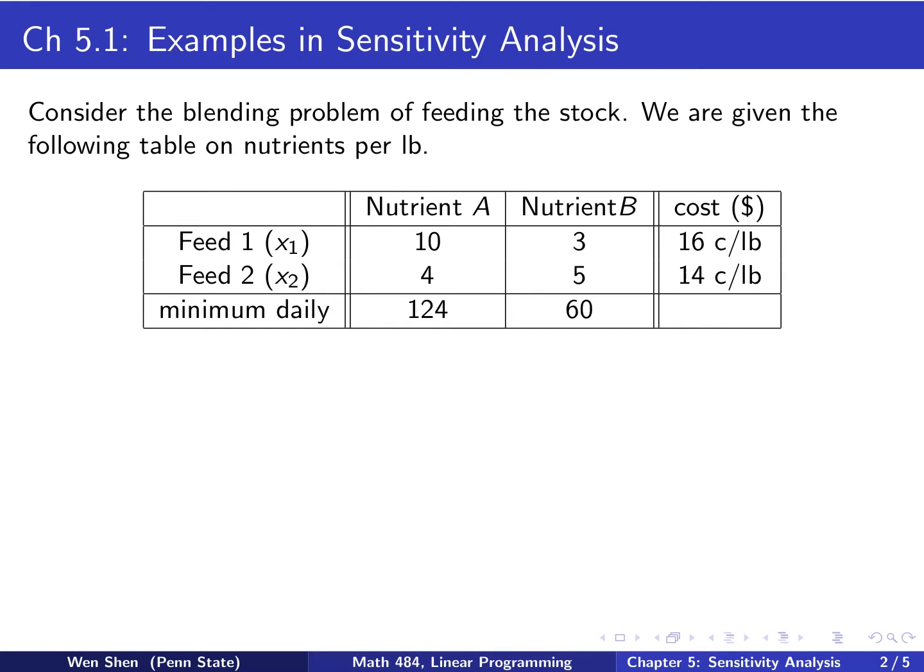So subchapter 5.1. In this subchapter, we'll go through several examples demonstrating sensitivity analysis and various aspects of that. Let's look at our first example. Let's consider the blending problem of feeding the stock, feeding the cows. We're given the information in the following table. On the market, there are two types of feeds, Feed 1 and Feed 2, and we consider two types of nutrients, A and B. For Feed 1, one unit has 10 units of nutrient A, 3 units of nutrient B, and it costs 16 cents. For Feed 2, the corresponding nutrients and its cost. At the same time, there is a minimum daily value for each nutrient that must be met.